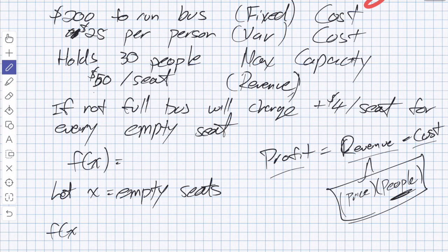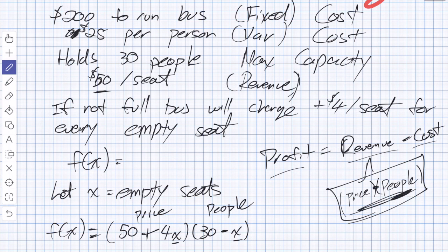Revenue is technically your price multiplied by the amount of product, or in this case, people on the bus. This is really what this question is trying to get at. So we're going to say let x equal empty seats. Then our function for our price is going to be $50 plus 4 times every empty seat. That's what x is, x is empty seats. So that's our pricing model.